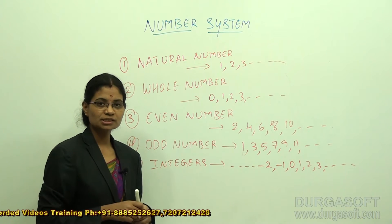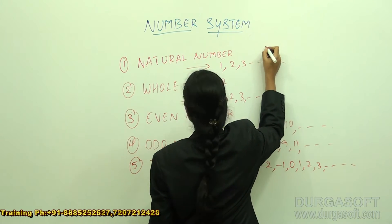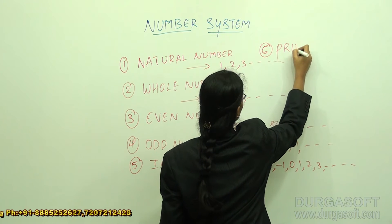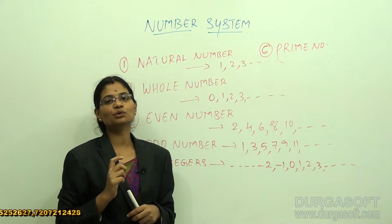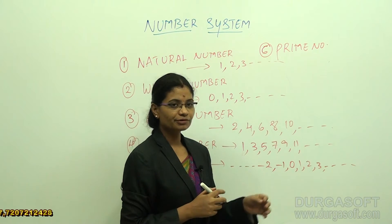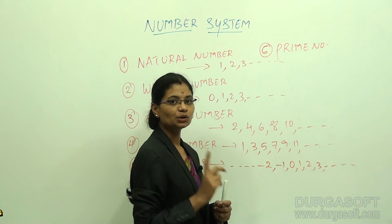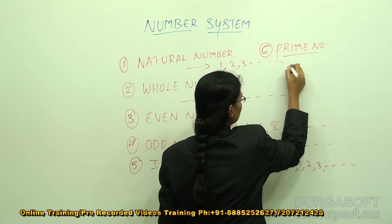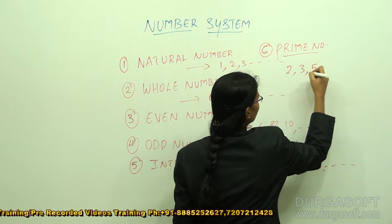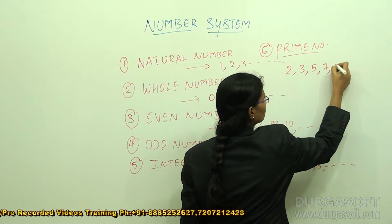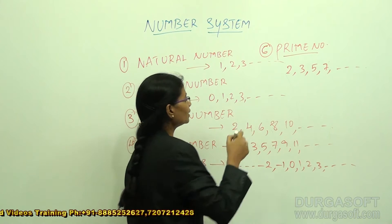Now let's look at prime numbers. A prime number is a number which has only two factors. For example, 2 has factors 1 and 2 — only two factors, so it's prime. Examples of prime numbers include 2, 3, 5, and 7. Numbers like 4, 9, and 10 are not prime numbers.